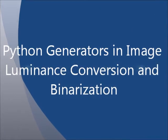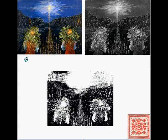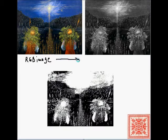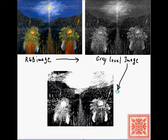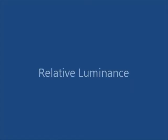In this screencast, we'll talk about Python generators in image luminance conversion and binarization. Here's an example of what we do. This is an RGB image of Vsevolod Ivanov's picture, Sichen, which means June. We're going to take an RGB image, convert it to grayscale through relative luminance conversion to get a gray-level image, then binarize the gray-level image to get a binary image. In the process, we will learn how to use Python generators.